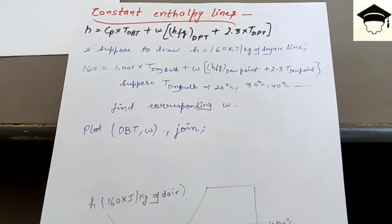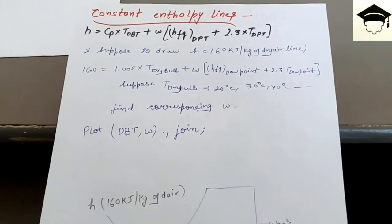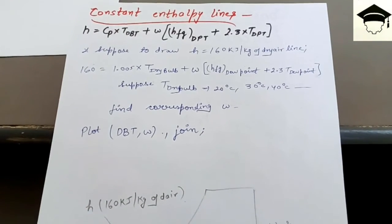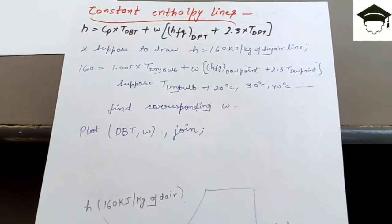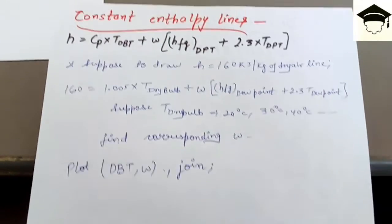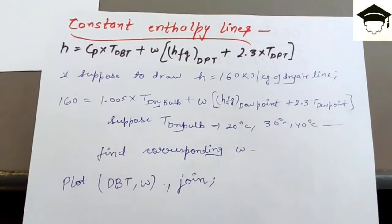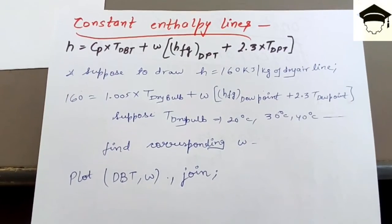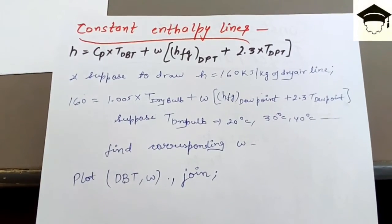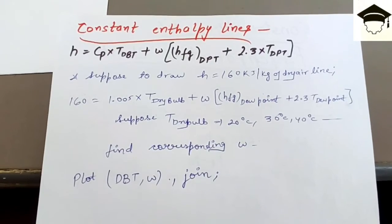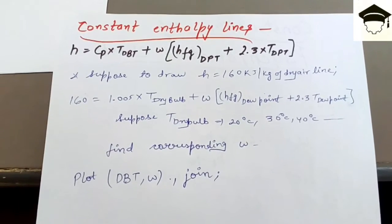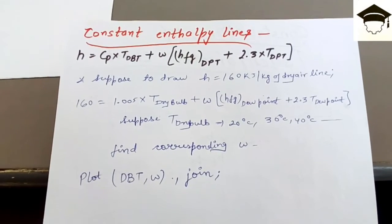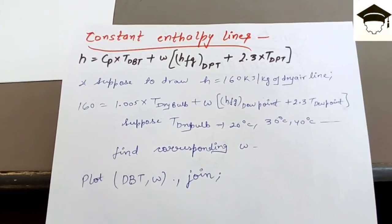Now I am starting with constant enthalpy lines. This is the equation we use to draw the constant enthalpy line: enthalpy h equals CP times dry bulb temperature, plus omega times bracket HFG — that is the latent heat at dew point temperature DPT — plus 2.3 times dew point temperature.